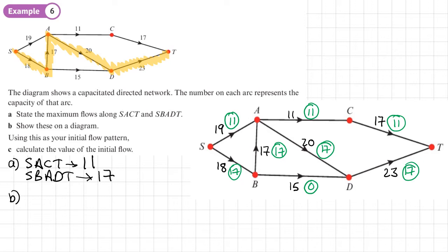And then part C, using this as your initial flow diagram, calculate the value of the initial flow. So an initial flow is going to be the flow out of the source or into the sink. Whichever way we do it, it's going to be 11 plus 17. So that's going to be 28.